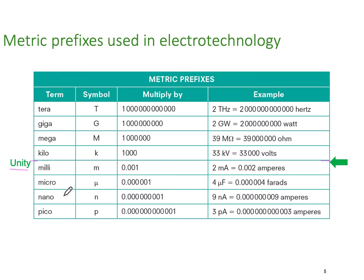As we go up in size in this direction, we go up by 1,000. We use the symbol lowercase k and we call it kilo. An example of that is 33 kV or 33,000 volts. It's much easier to say and write 33 kV than 33,000 volts.